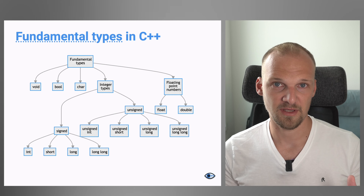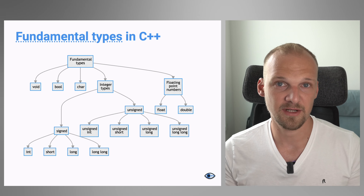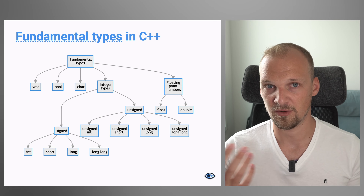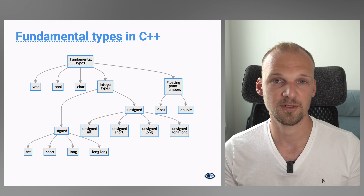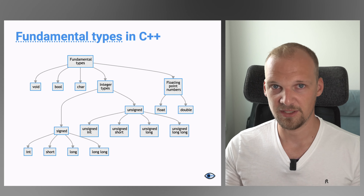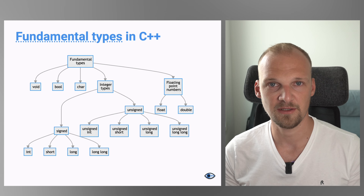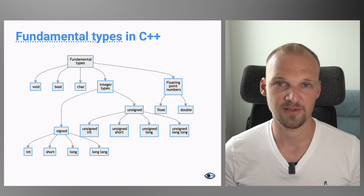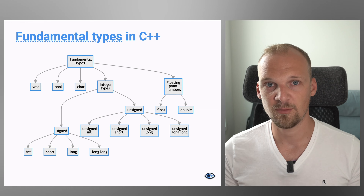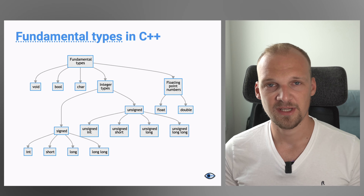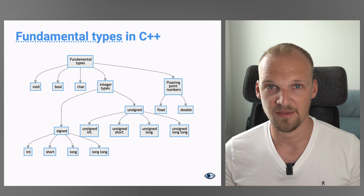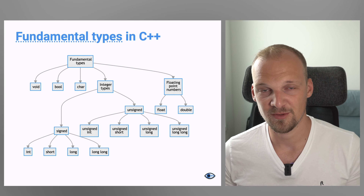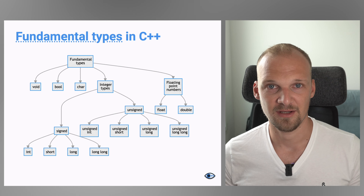Now let's talk about what types variables can have. There are many built-in types in C++, as well as custom types users can write — we'll cover custom types later. For now, let's focus on the built-in fundamental types. These start with the void type, which represents nothingness. You cannot create a variable of type void, but it will become useful when we write our own functions.